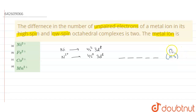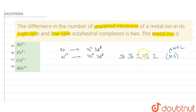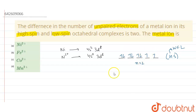The high spin complex is made when the ligand is a weak field ligand. Filling the 8 electrons: 1, 2, 3, 4, 5, 6, 7, and 8. Since this is a high spin complex, pairing does not occur, so the number of unpaired electrons here is 2.